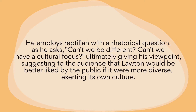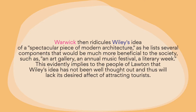She then delves into article two: 'He employs repetition with a rhetorical question as he asks, can't we be different? Can't we have a cultural focus? — ultimately giving his viewpoint, suggesting to the audience that Lawton would be better liked by the public if it were more diverse, exerting its own culture.' Moving into the next sentence, we start comparing back: 'Warwick then ridicules Wiley's idea of a spectacular piece of modern architecture, as he lists several components that would be more beneficial to the society, such as an art gallery, an annual music festival, a literary week. This evidently implies to the people of Lawton that Wiley's idea has not been well thought out and thus will lack its desired effect in attracting tourists.'